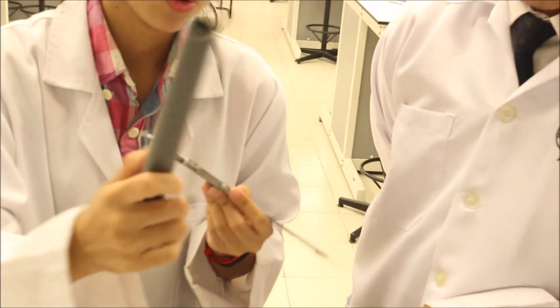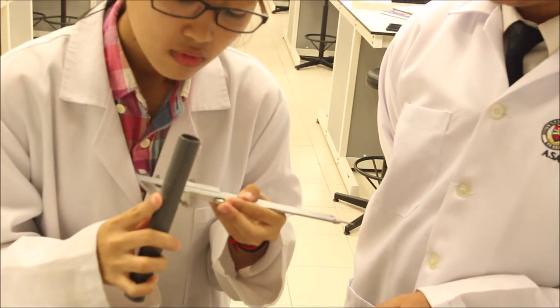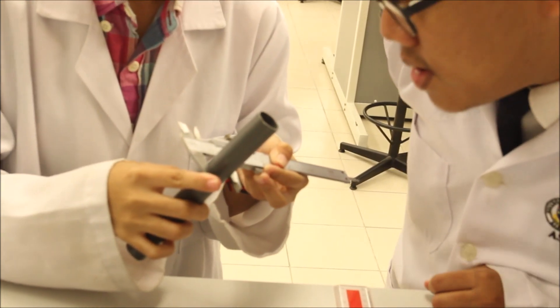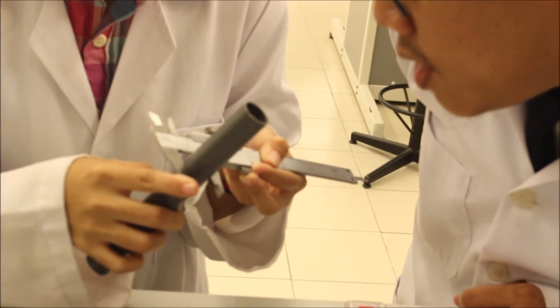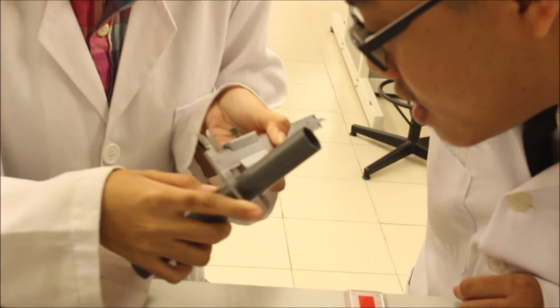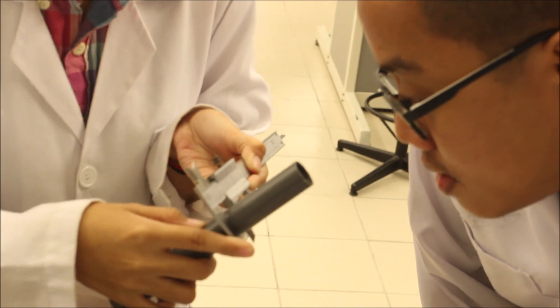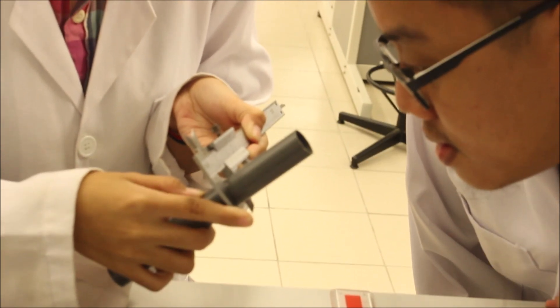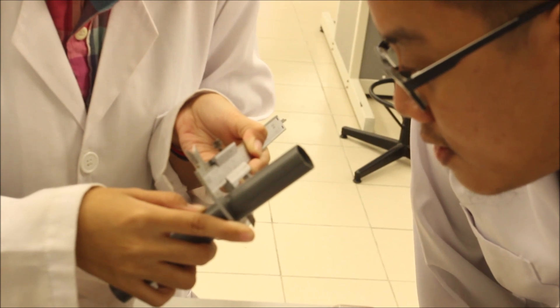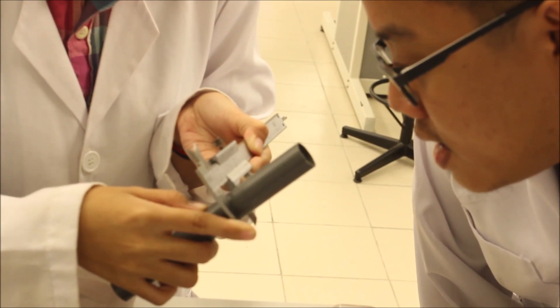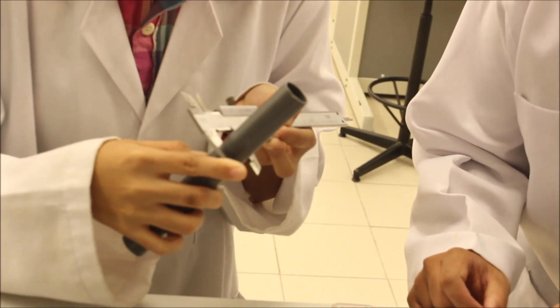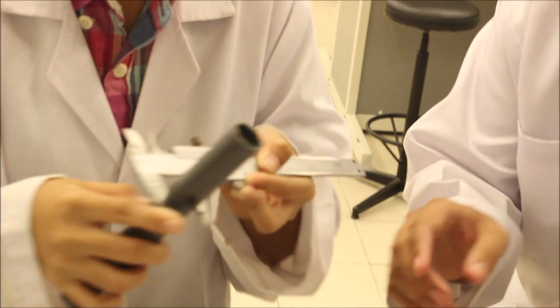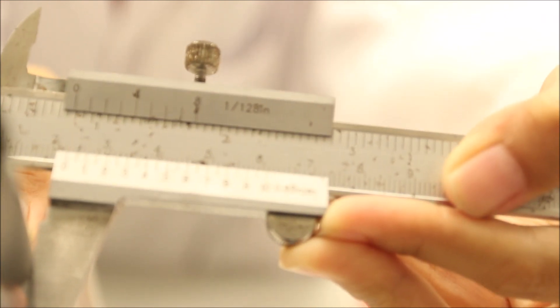Let's measure the distance. The main scale here shows 2.1 cm, and the vernier scale coincides at around 1, 2, 3, 4, 5, 6, 7, 8. About 8. So the reading here shows that the thickness of the tube is 2.18 cm. Shall we proceed?